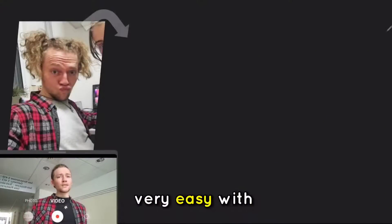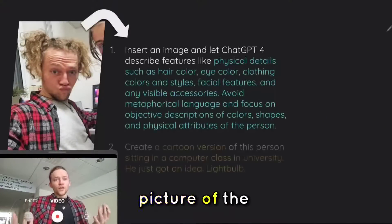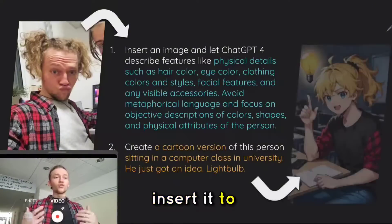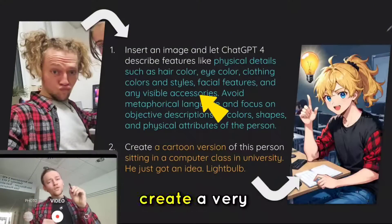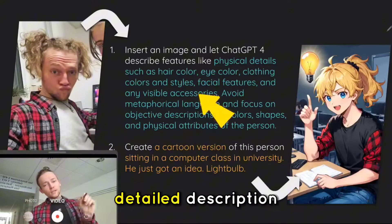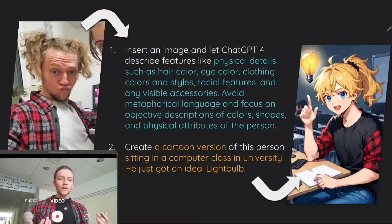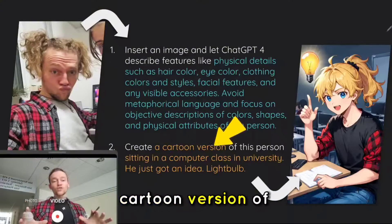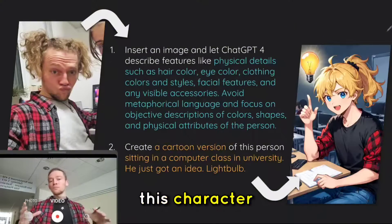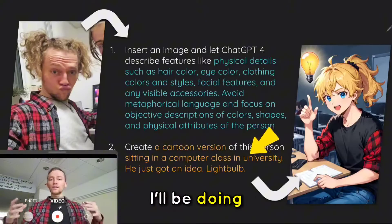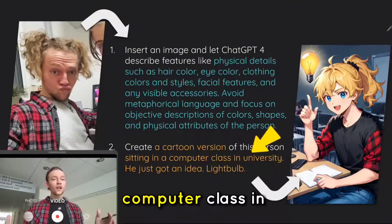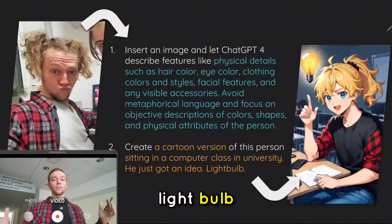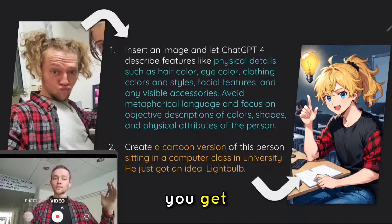And that's actually very easy with ChatGPT-4. Just take a picture of the character you want, insert it into ChatGPT-4 and let it create a very detailed description of that person. Then you ask it to create a cartoon version of this character and tell it the action they'll be doing — for example, sitting in a computer class in university and just getting an idea. Light bulb. That's it. This is the picture you get.